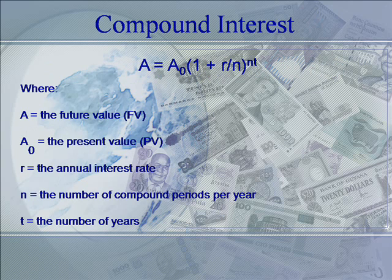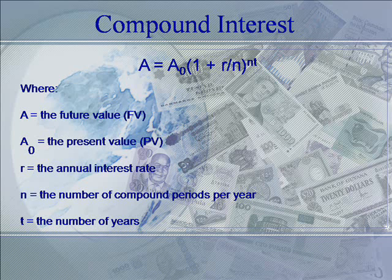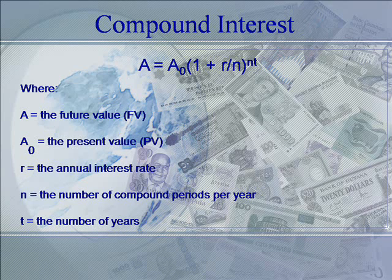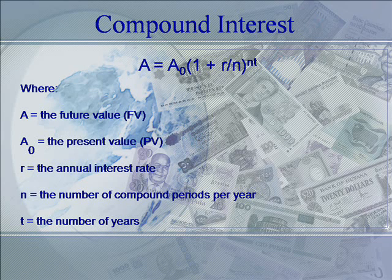Let's take a look at the basic equation for compound interest. This is the same equation we first saw in perhaps college algebra. The equation tells us that the future value equals the present value times the quantity 1 plus the annual rate divided by the number of compounding periods per year, raised to the power of n times t — that is, the number of compounding periods times the number of years.